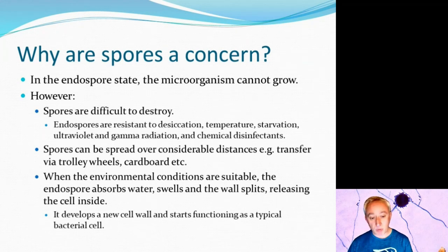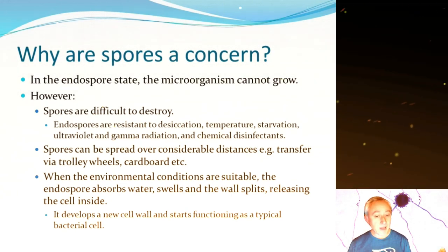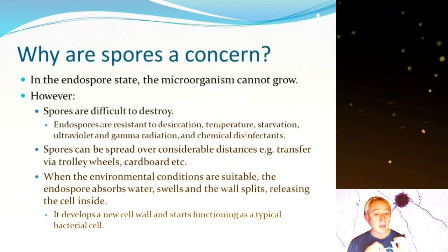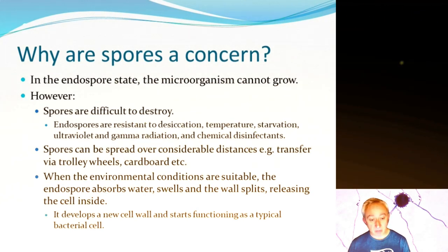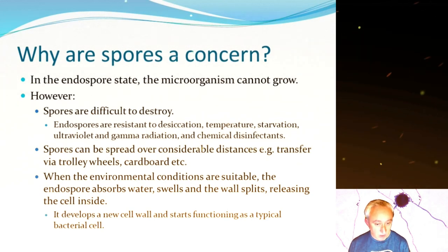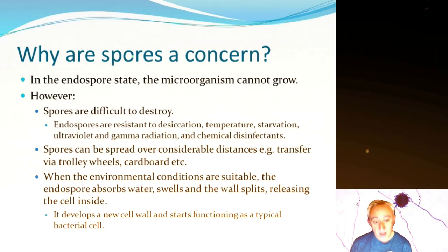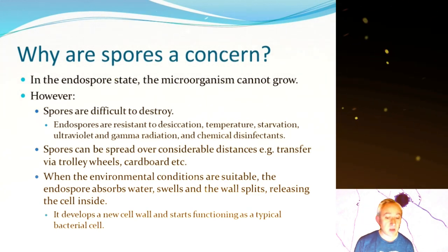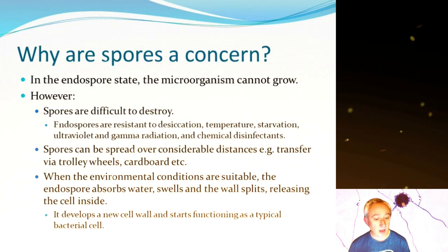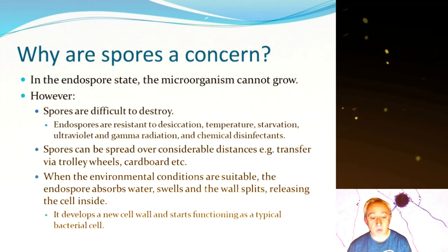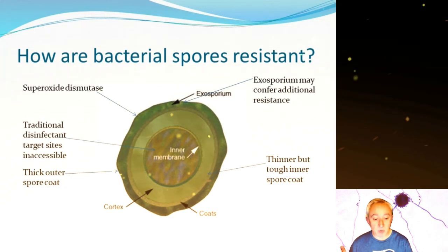We should worry about spores because they are the mechanism that allows bacteria and fungi to survive adverse conditions. These are resting states — dormancy — that will allow the spore to germinate under favorable conditions, particularly when there is sufficient water. It is also important to understand that spores can form relatively quickly: in the case of bacteria, it takes less than six hours to change from a vegetative cell to a spore, and back from a spore to a vegetative state is often under one hour. Spores are also difficult to destroy.